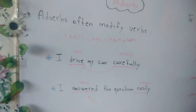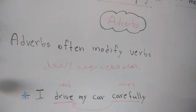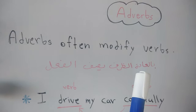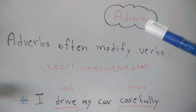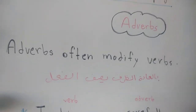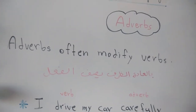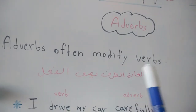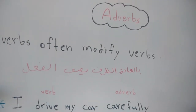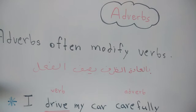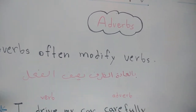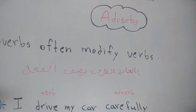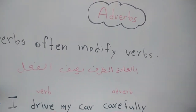The first thing you must know about adverbs is that adverbs often modify verbs. يعني بالعادة الظرف يصف الفعل. الـ adverb شو بيعمل؟ بيجي حتى يوصف الفعل. مش بيجي يوصف الاسم ولا الضمير — بيجي حتى يوصف الفعل ويحكي كيف أنا قمت بهذا الفعل. مشان هيك قلت لكم often، يعني غالباً.